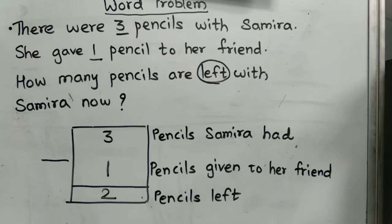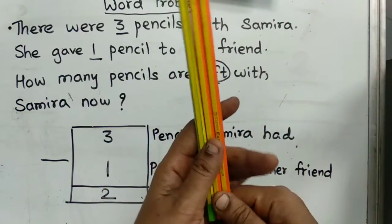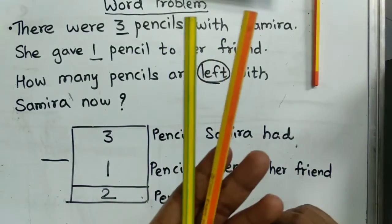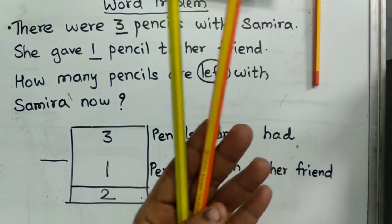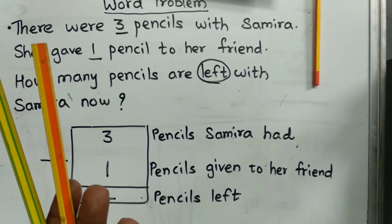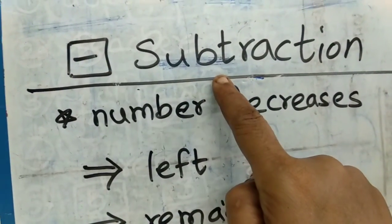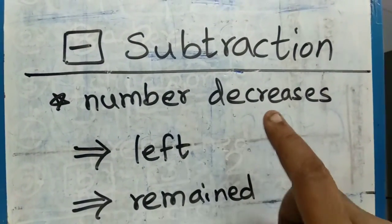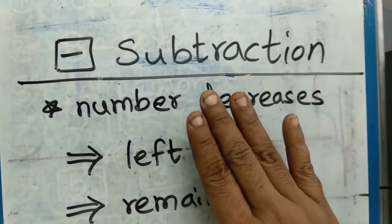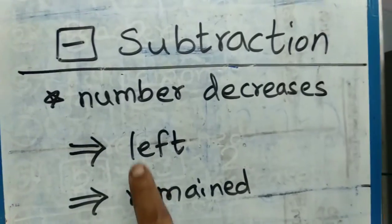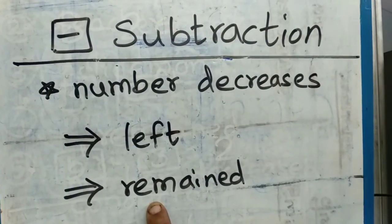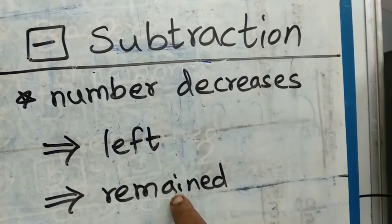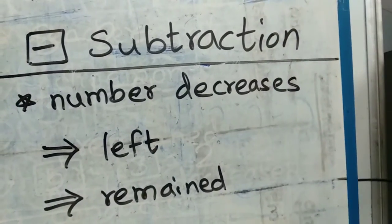Understood, children? Samira had three pencils. She gave away one pencil to her friend. So how many are left with her now? Two pencils. We got the answer. We should do subtraction whenever the number decreases. The beginning number was there, then something happened and the number decreased — then we do subtraction. The key words in subtraction sums are L-E-F-T 'left' and R-E-M-A-I-N-E-D 'remained'. Whenever you see these words, do subtraction.